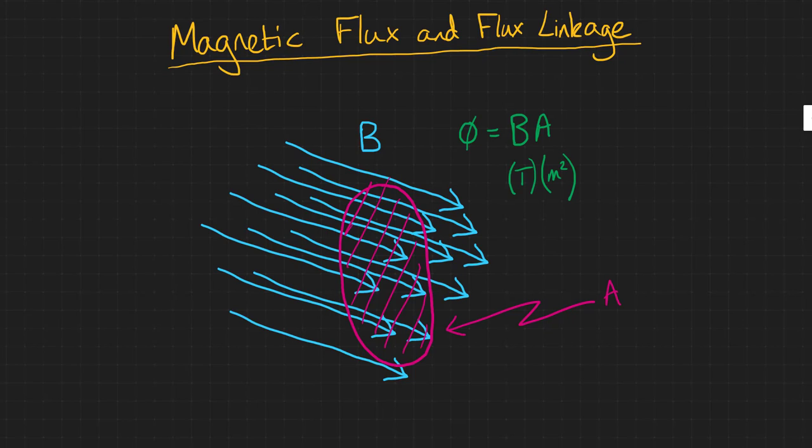And the unit for magnetic flux is the Weber, symbol capital W lowercase b, and it's equivalent to one Tesla square metre.